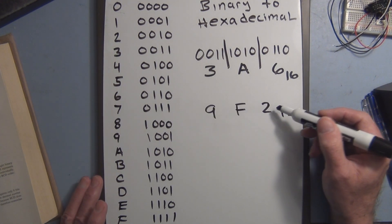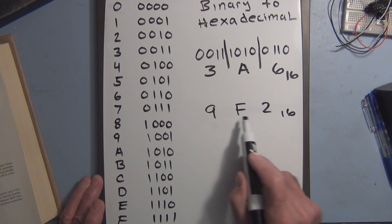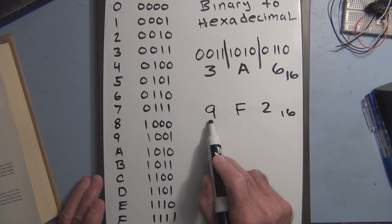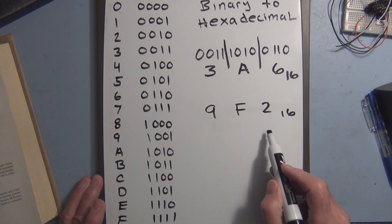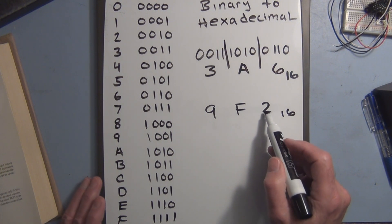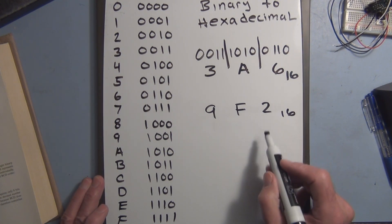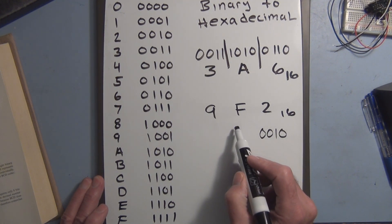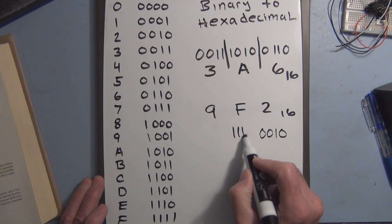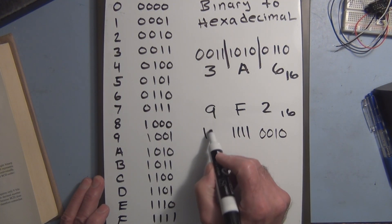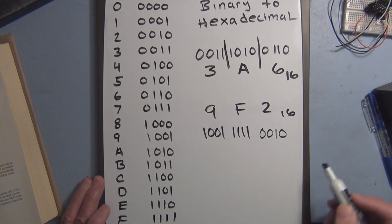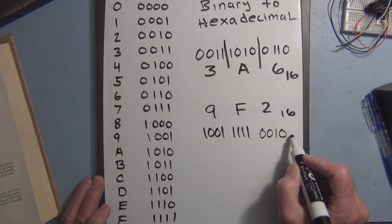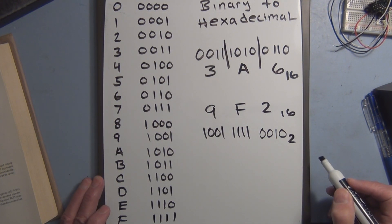And to convert from hexadecimal to binary, you just take each individual digit and convert it to its equivalent binary, its equivalent 4-bit binary number. So 2 is 0010, F is 1111, and 9 is 1001. And that's the equivalent binary number.